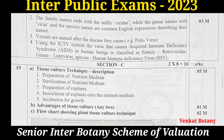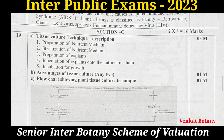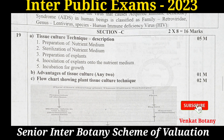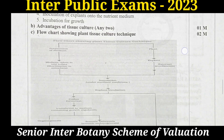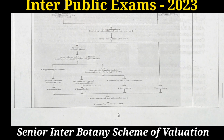Question 19: Describe the tissue culture technique and what are the advantages of tissue culture over conventional methods of plant breeding in crop improvement. Draw a flowchart showing plant tissue culture technique for two marks, and mention any two advantages for two marks.